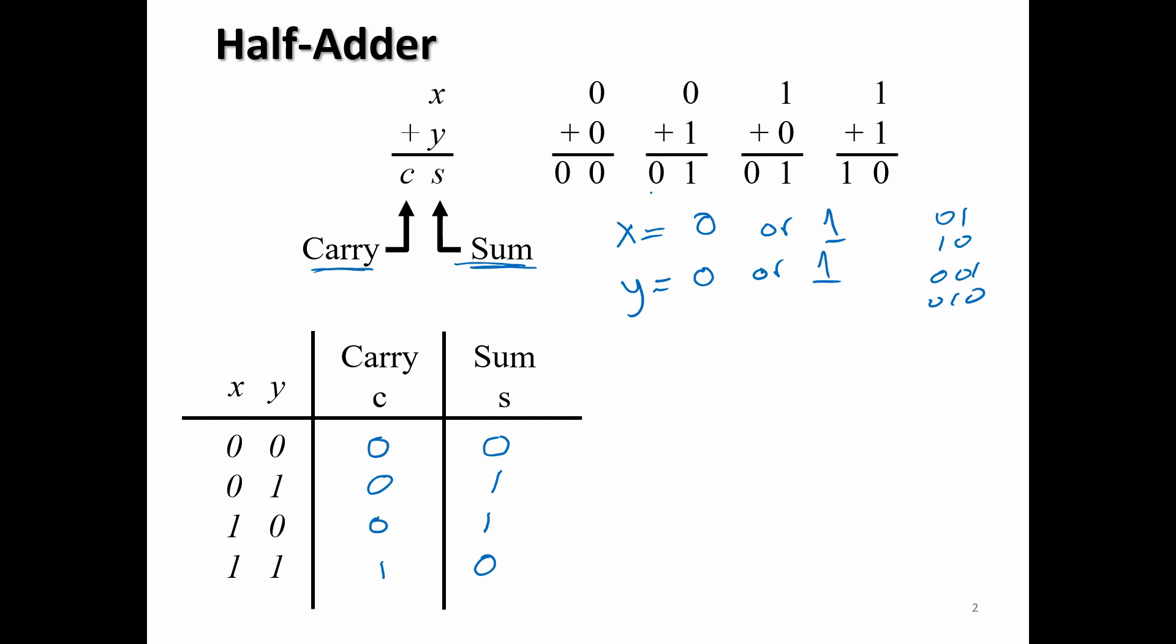So now that we have our truth table, we can get an expression for each of these outputs. In the case of the carry, that's just x and y. Now in the case of the sum, we're going to write the min term. So for this one, we have x̄y plus xȳ. And so our sum is equal to x̄y plus xȳ. This is what we call an XOR. And you can see other of my videos for a detailed explanation of the XOR.